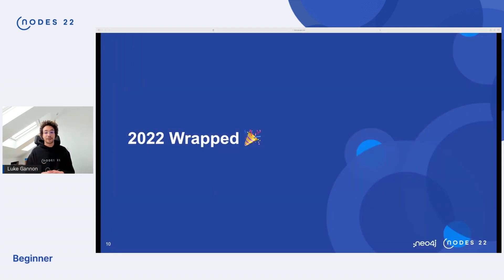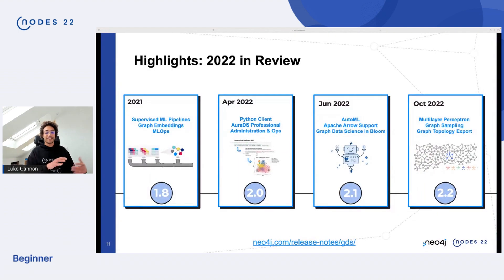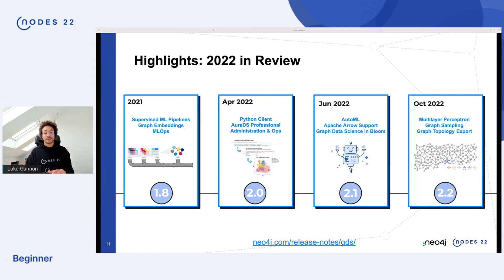For the 2022 wrapped: at the end of 2021 we had completed supervised machine learning pipelines, introduced more graph embeddings, and enhanced our ML ops. In April 2022 we launched 2.0, which included the Python client plus new algorithms. We also launched AuraDS Professional on GCP and added administration and ops for larger data science teams. In June we added more AutoML features for hyperparameter auto-tuning, Apache Arrow support, and GDS integration with Neo4j Bloom, announced at Graph Connect. In October we launched 2.2 with multi-layer perceptrons, graph sampling, and graph topology export. Head over to neo4j.com/release-notes to check out what we've been up to release by release.